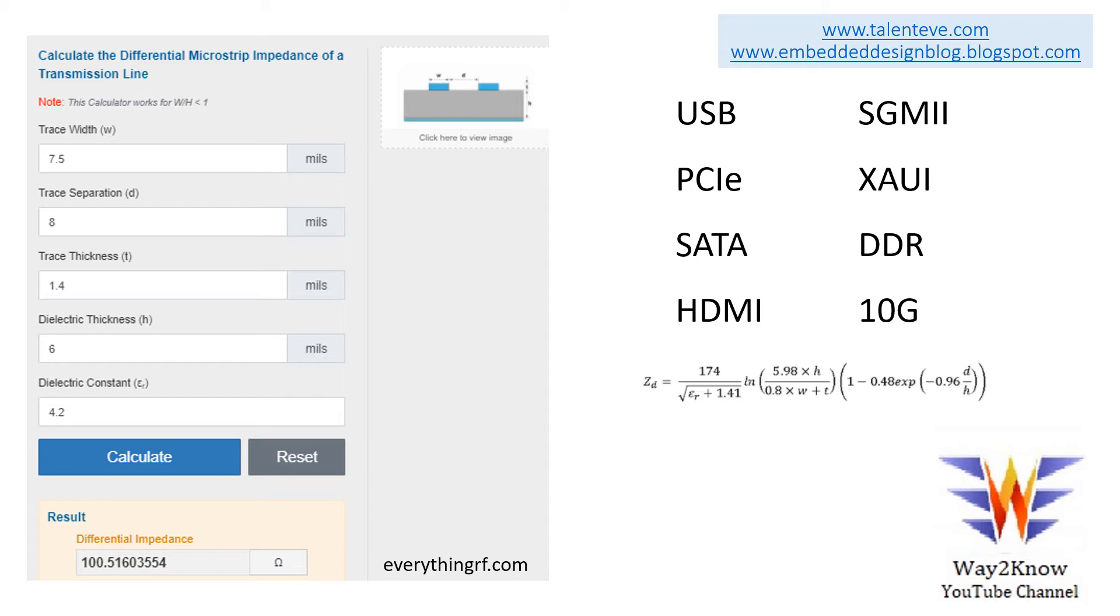Now to see 100 ohm impedance, if you see here this simple PCB layout, you can see two signals. These are complementary signals P and N, example data plus data minus, or clock plus or clock minus, which are separated by a distance d. Then each trace is having a width w. This is the copper width which will be measured in mils.